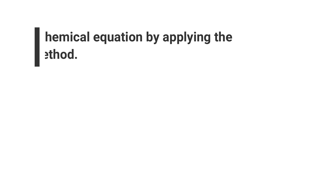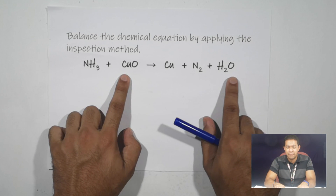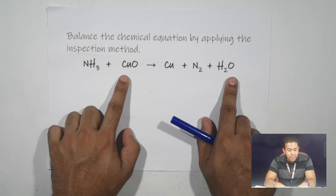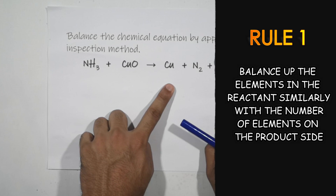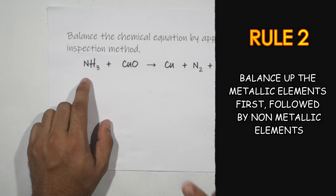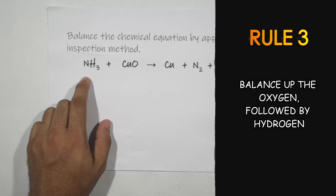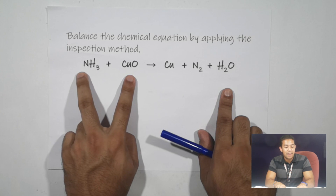Okay, so here is the question: balance the chemical equation by applying the inspection method. As you can see, we have a few elements on the reactant side — NH3 plus CuO — and the products are Cu, N2, and also H2O. The number of elements in the chemical equation is not balanced yet. The rule of thumb, similar to what you learned in SPM, is that we have to balance the elements on the reactant side to match the product side. Remember, we always balance elements other than oxygen and hydrogen first, then balance oxygen, and finally hydrogen.